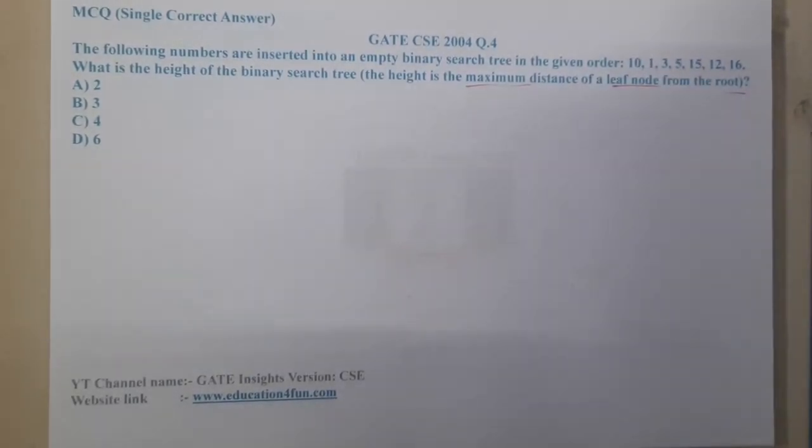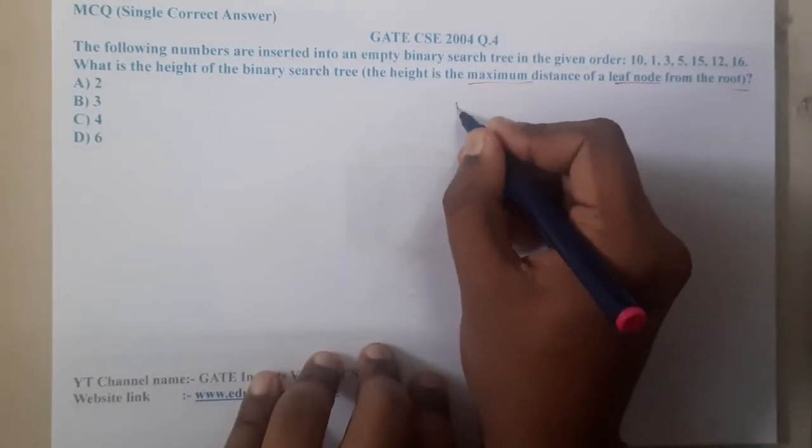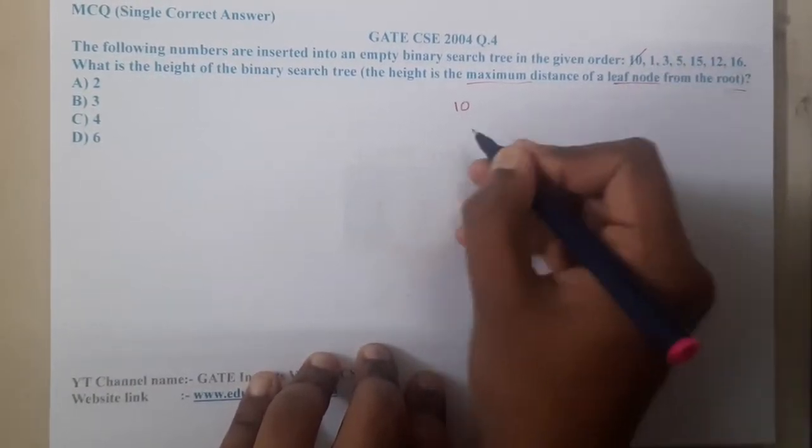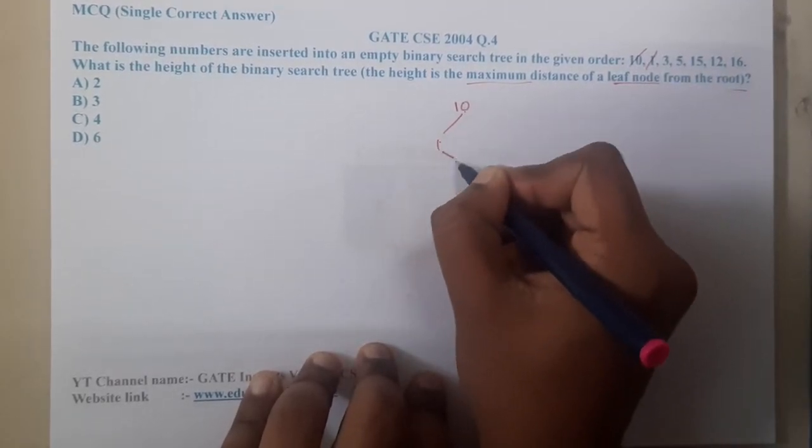Now let us start constructing the binary tree. I think everyone remembers how we will be constructing. The first element is 10. Is 1 less than 10? Yes, so it will come that side. Is 3 less than 10? Yes. Is it greater than 1? Yes, so it will come this side.